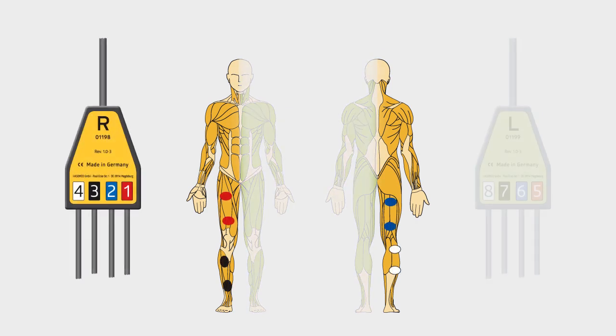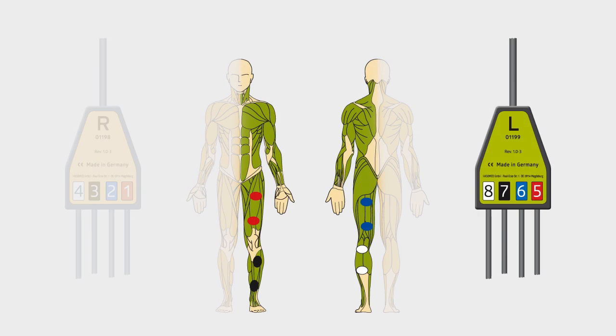The Hasamed cables and electrode connectors themselves are color-coded to match. This makes the application and allocation of the electrodes very easy, and it saves time.